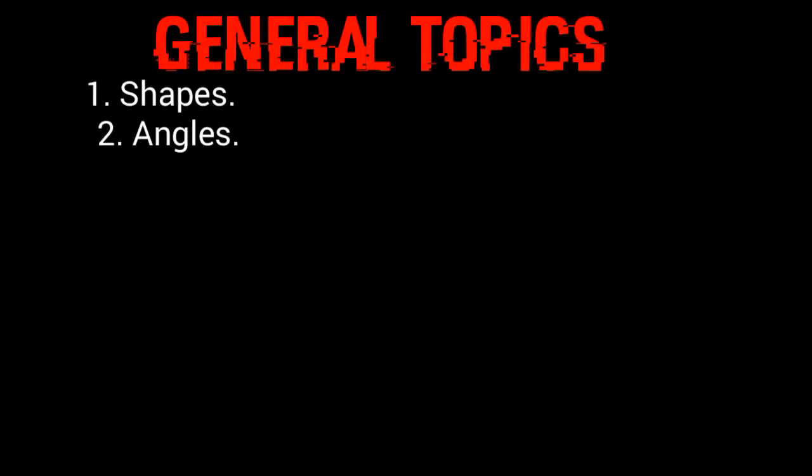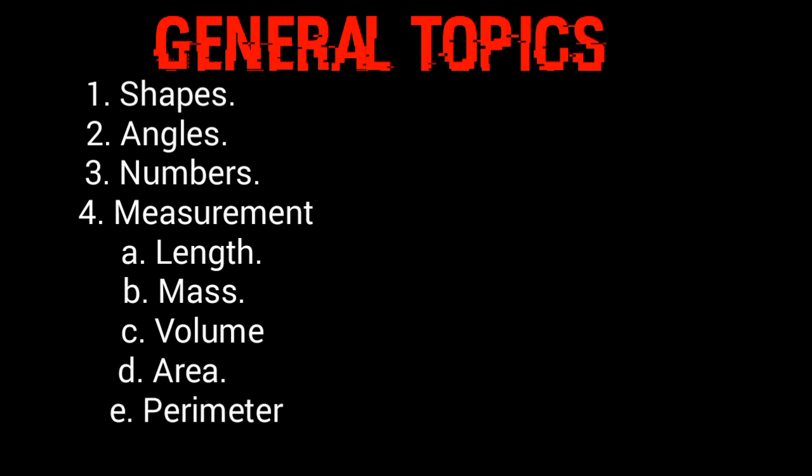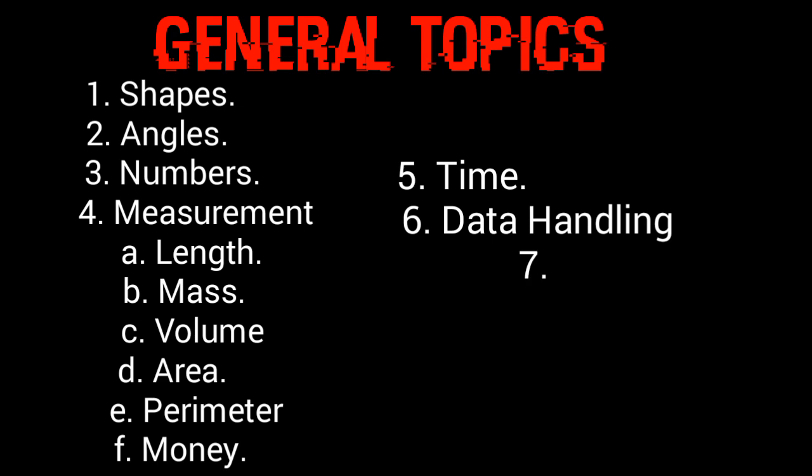The general topics taught in primary classes are shapes, angles, numbers, and measurement. In the measurement category, we are learning land mass, volume, area, perimeter, money and time, data handling, and patterns. These are the general topics mostly taught in primary classes.